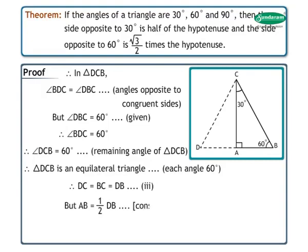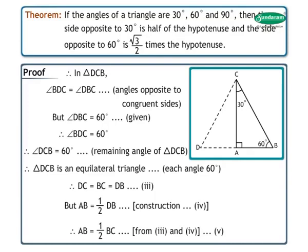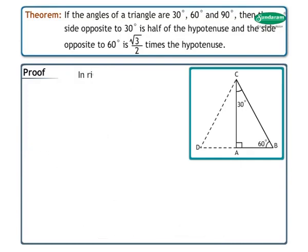But AB is equal to 1 upon 2 DB by construction. Mark this as statement 4. Therefore, from statements 3 and 4, we get AB is equal to 1 upon 2 BC. Mark this as statement 5.